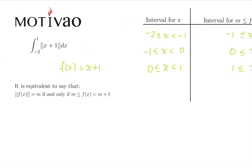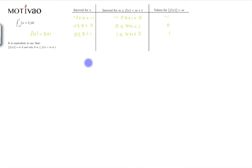That integral becomes: we choose these intervals for the limits of integration, so it's going to be from minus 2 to minus 1 of f(x), plus from minus 1 to 0, plus 0 to 1 of x plus 1.